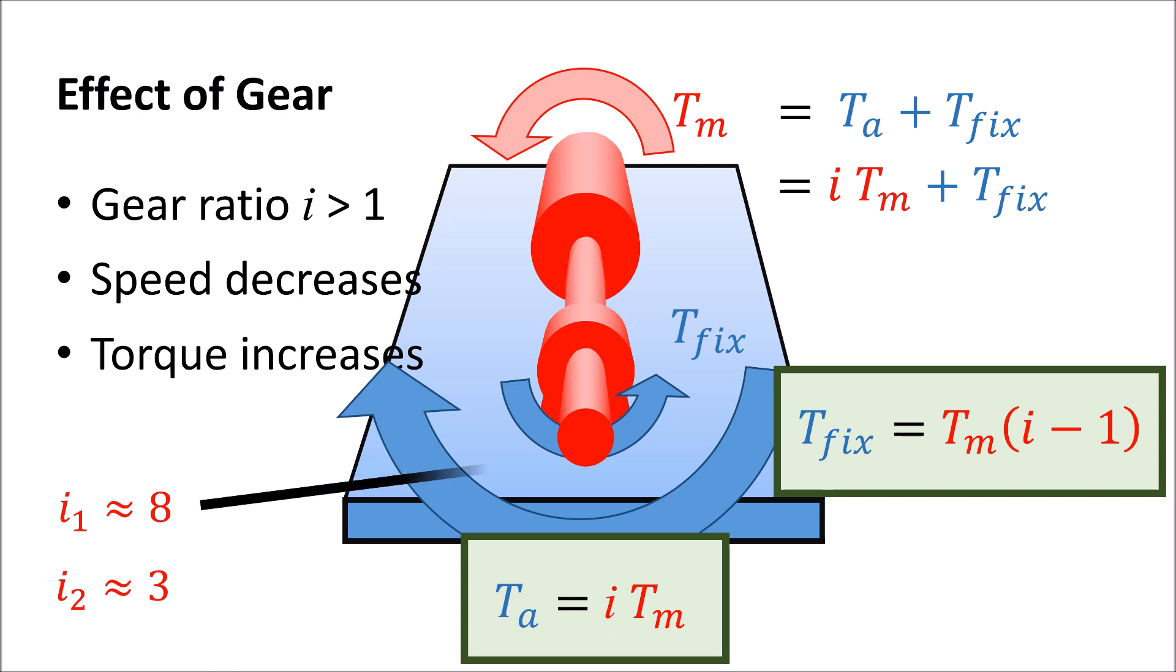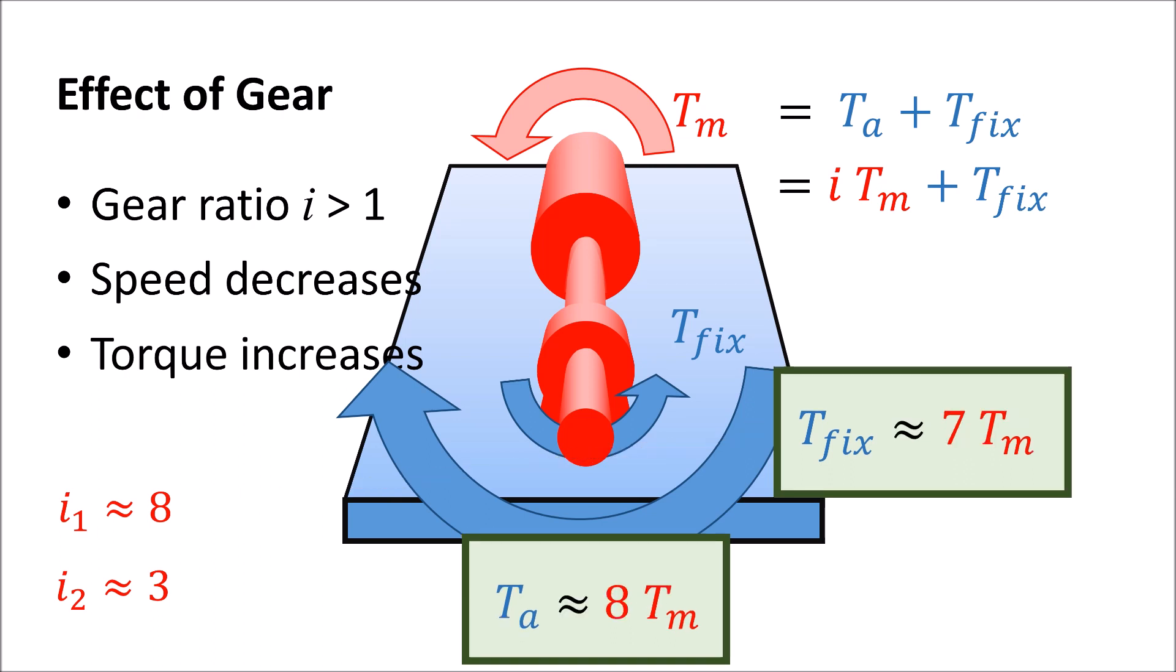For the first gear the axle torque is about 8 times larger than the motor torque.